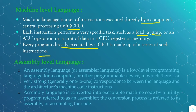Machine level language consists of ones and zeros only. The other is the assembly level language, or assembler language. It is the low level programming language for a computer.